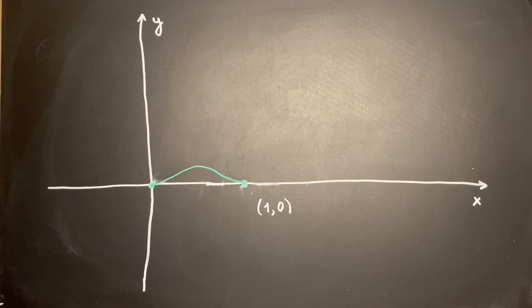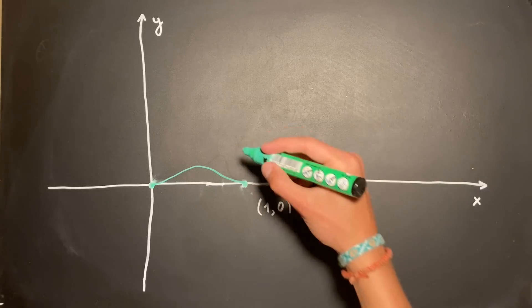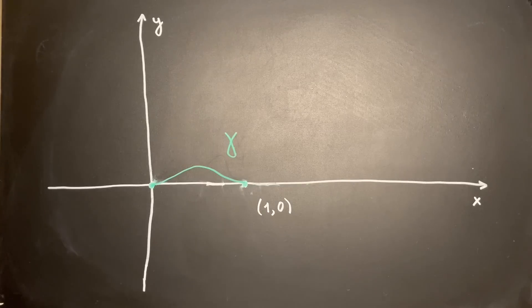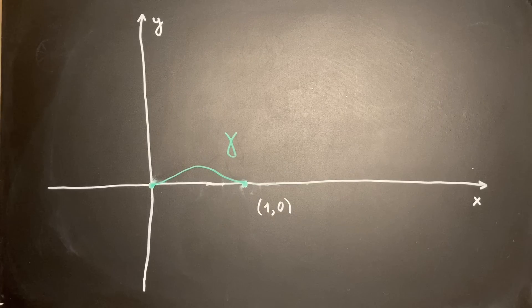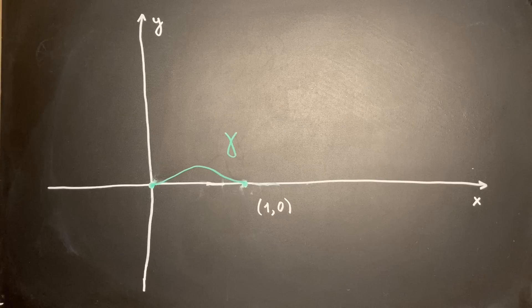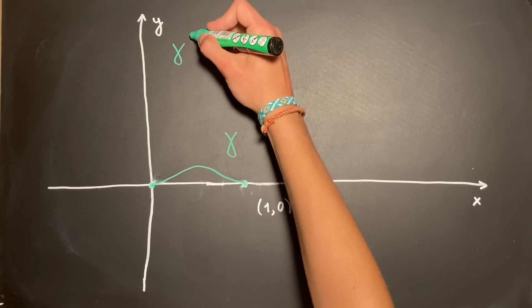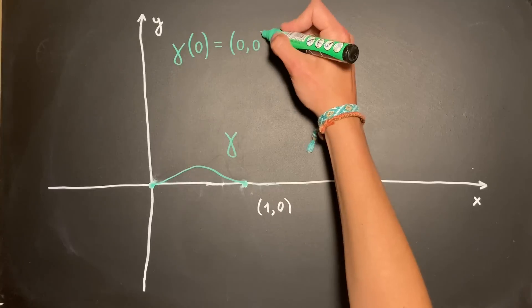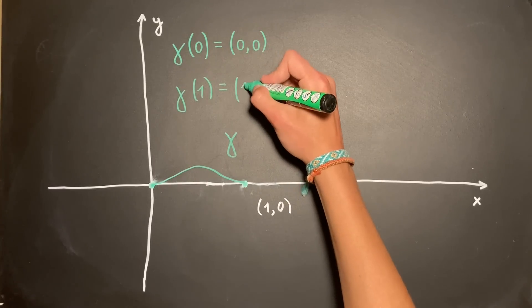Consider the path point B follows from the origin to point (1,0). We call this path the seat curve gamma since the entire track, however long, can be constructed from it. By the way, gamma here is a function of position with respect to time. Let's assume that B is at the origin at time 0 and at point (1,0) at time 1.